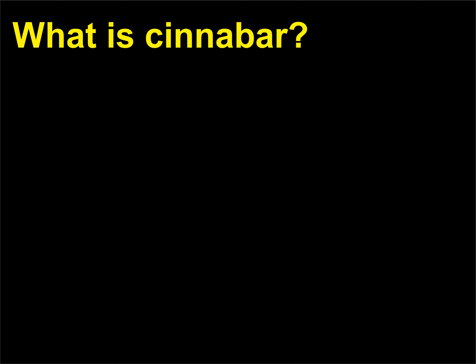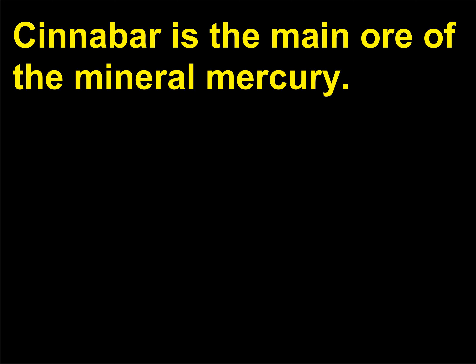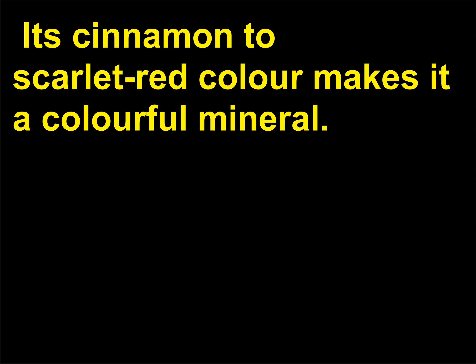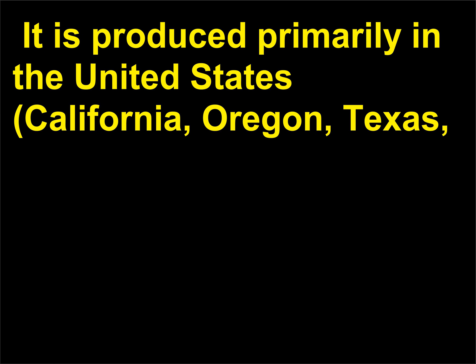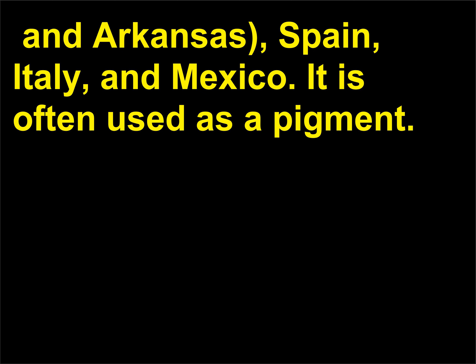What is cinnabar? Cinnabar is the main ore of the mineral mercury. Its cinnamon to scarlet red color makes it a colorful mineral. It is produced primarily in the United States (California, Oregon, Texas, and Arkansas), Spain, Italy, and Mexico. It is often used as a pigment.